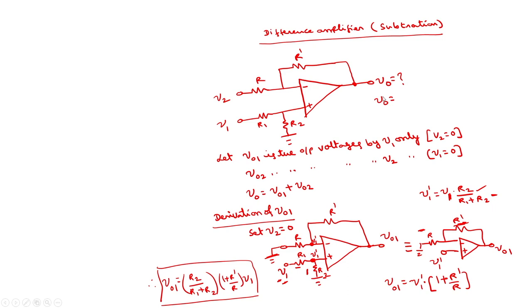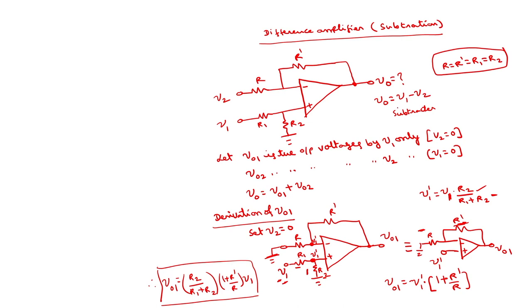This is how we can implement addition and subtraction using operational amplifiers. There is one important parameter for this difference amplifier called the Common Mode Rejection Ratio, CMRR. This is a figure of merit of the operational amplifier and determines how efficiently the amplifier rejects common mode signals such as noise, which are undesired signals. I will discuss this in the next lecture.